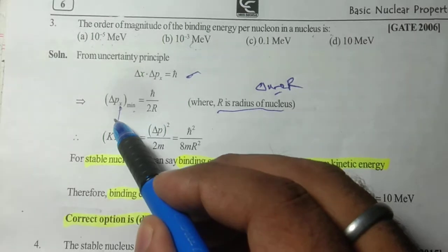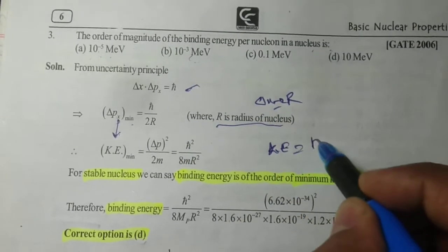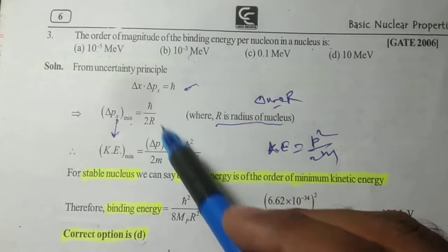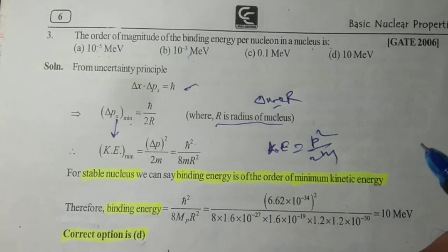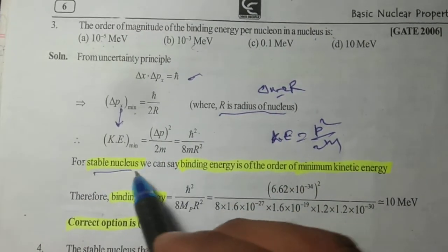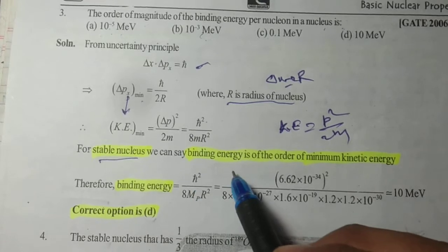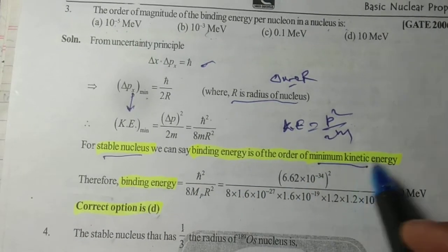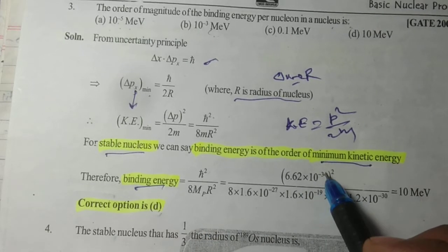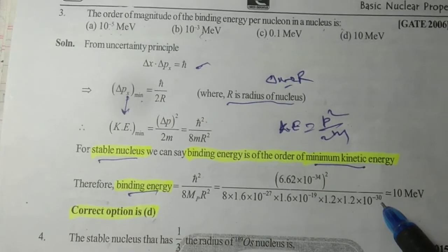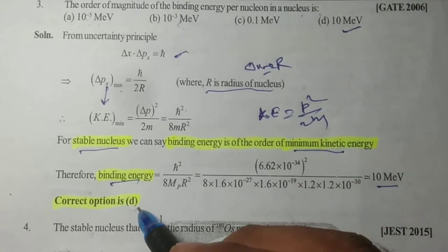When the momentum is minimum, kinetic energy is also minimum. Kinetic energy equals delta p square upon 2M, which equals h bar square upon 8M R square. For stable nucleus, we can say binding energy is of the order of minimum kinetic energy. Therefore, binding energy equals h bar square upon 8 times mass of proton times R square. After substituting all values and solving, we get 10 MeV, which is option D. So correct option is D.